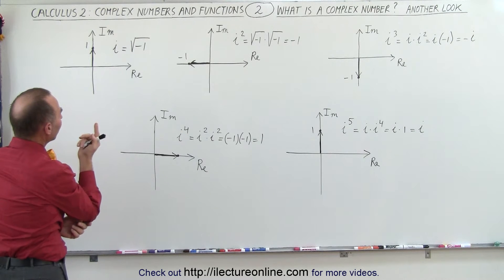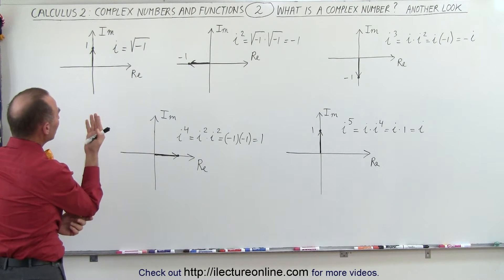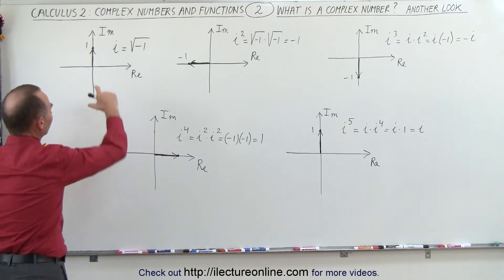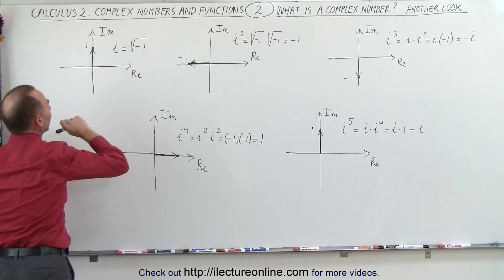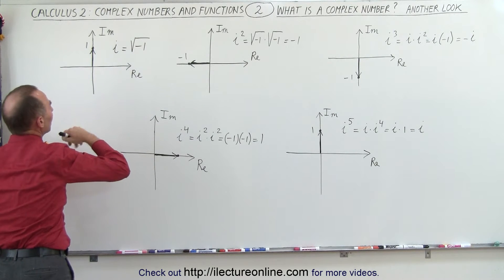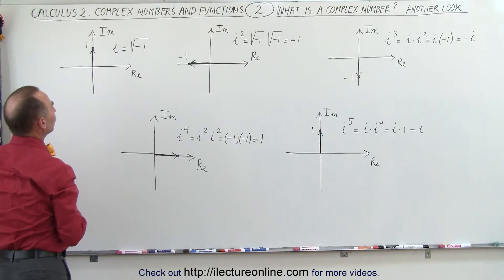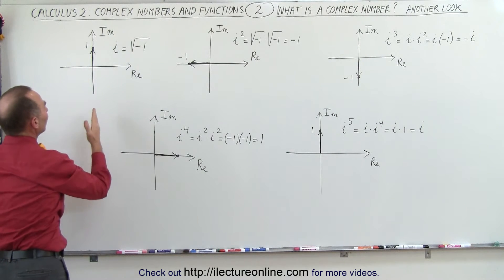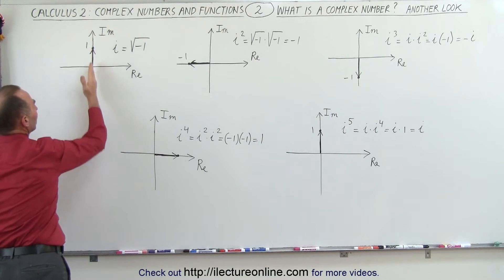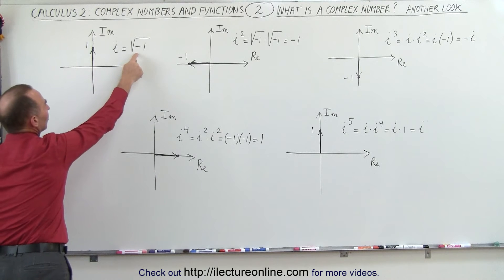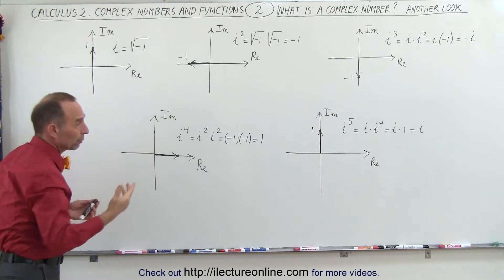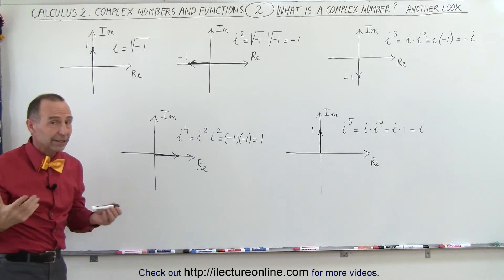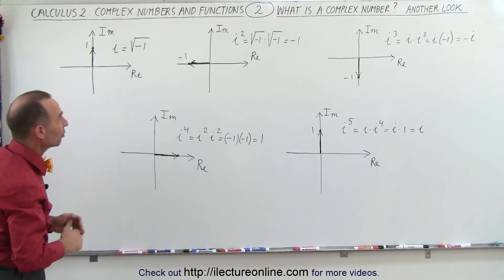So you can see that i can actually be represented by a vector, where this is the magnitude of i. And since it's pointing in the imaginary direction, it's an imaginary number, and therefore the square root of negative one is indeed imaginary.